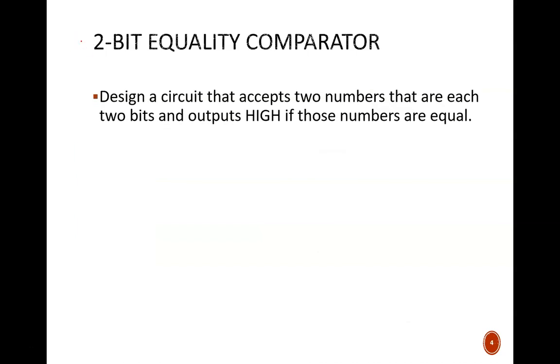So how can we extend that to a two-bit equality comparator? Let's design a circuit that accepts two two-bit numbers and determines if the numbers equal each other. For example, if the input numbers are 1 0 and 1 1, then they are not equivalent and the output should be high.